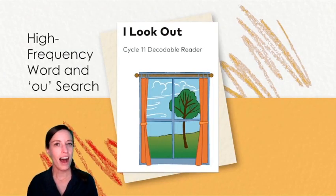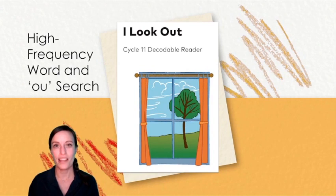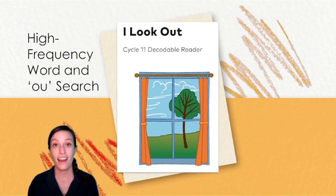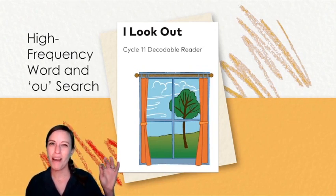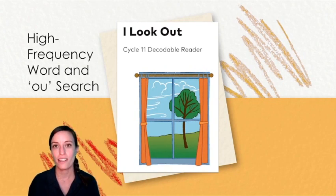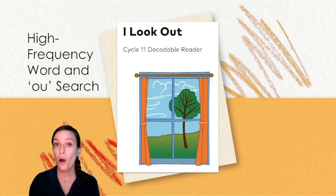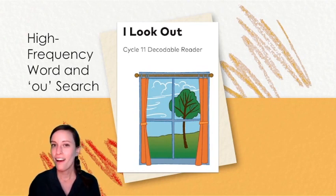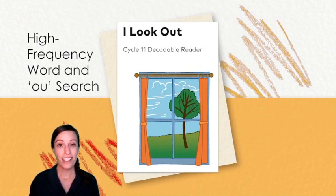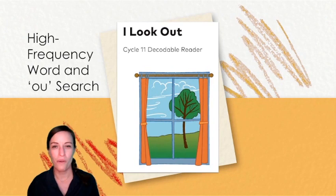This book, I Look Out, is based on the story that I read to you earlier. But this version of the story has words that you can read — some are high frequency words and some you can tap out. Today, as we read this story together, I want you to be on the lookout for words that have the vowel team OU, that says OW. Can you see one in the cover of the story? There's an OU vowel team in the word out. As I read, you can join me, and then we'll talk about the words you find.